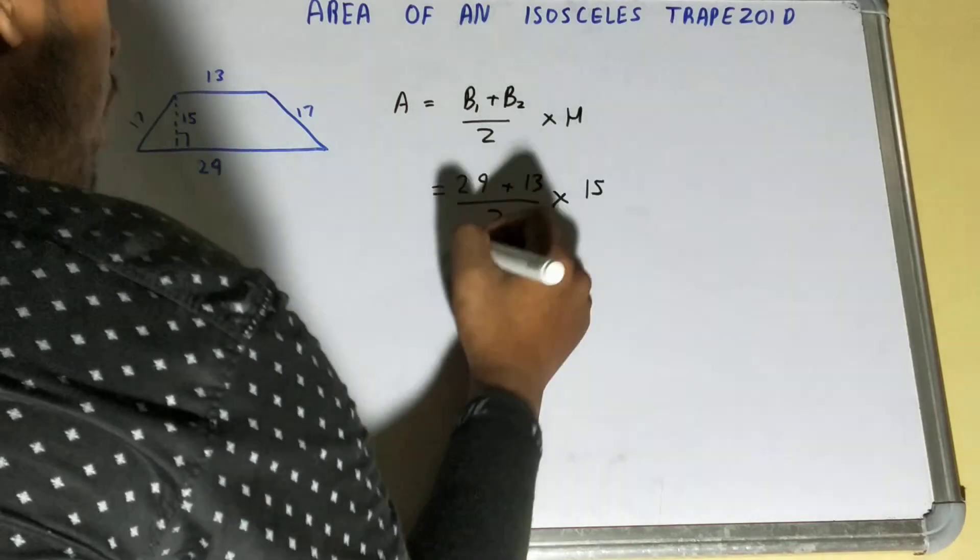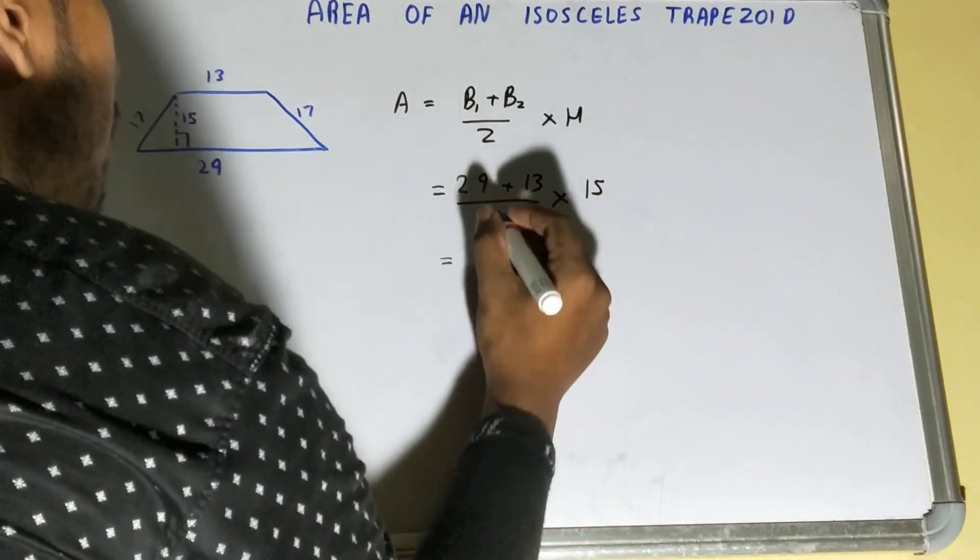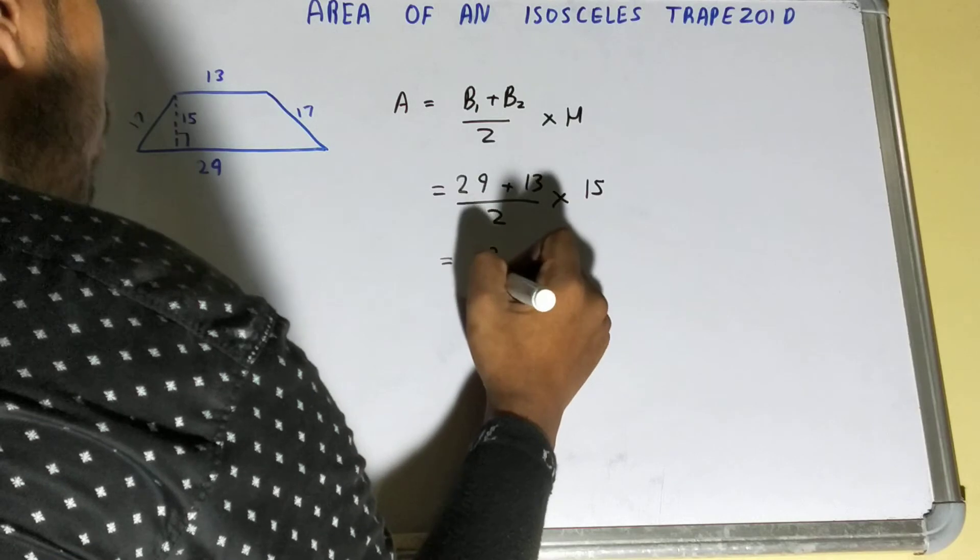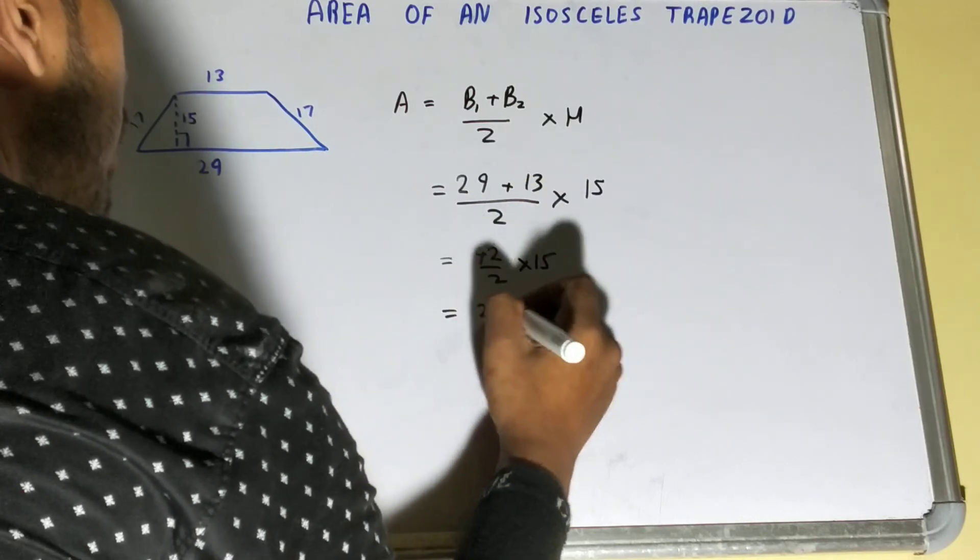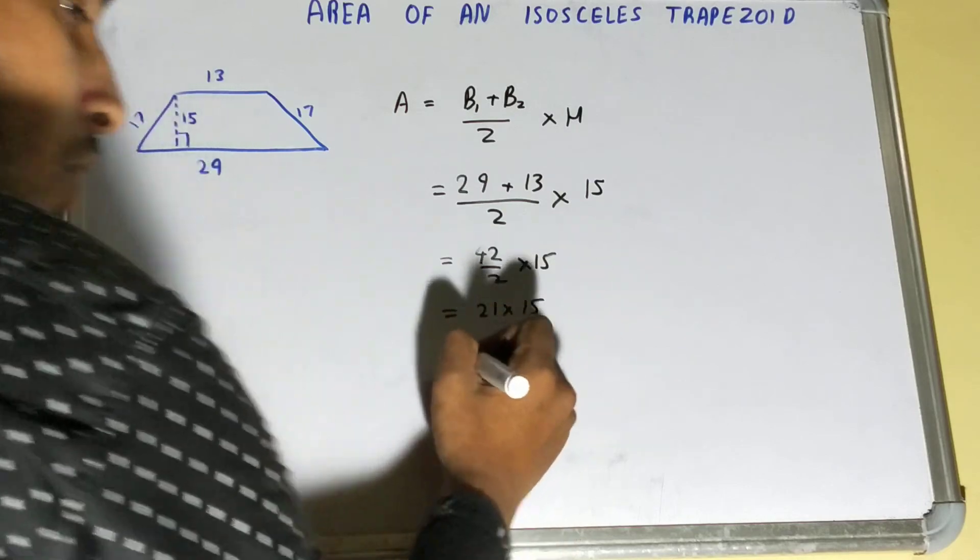So let's try to find it out. 29 plus 13 will be 42, divided by 2, times 15, so it will be 21 times 15.